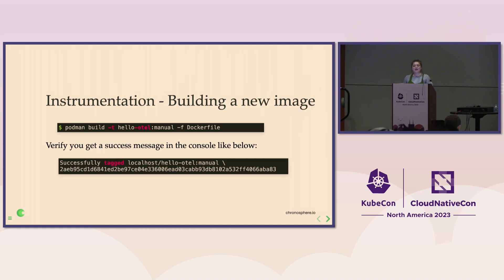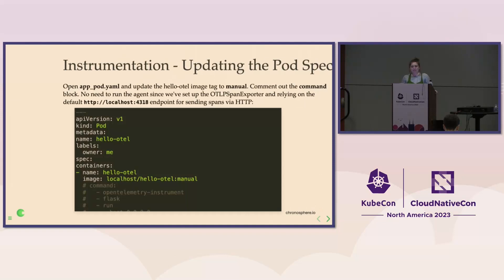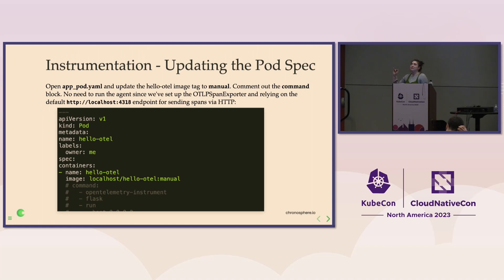This is the loop we know: we will build our image, make sure it's tagged. In this case, the only change is we're going to tag this as 'manual' — so you've got a version of the programmatic, the automatic, and the manual. The other change we'll make is over in app_pod.yaml, our pod spec. Because we've changed our tag for the image we built, we need to make sure our pod has that updated tag. Then comment out that command block, because we're manually instrumenting now and we don't need the auto-instrumentation agent to wrap our Flask command.